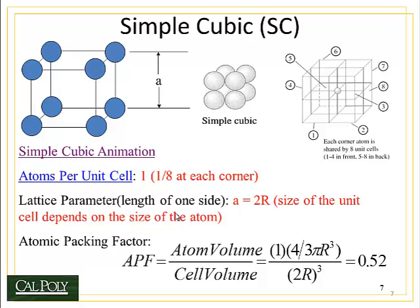The last thing we can figure out about the simple cubic unit cell is something called the atomic packing factor. Atomic packing factor measures the volume of atoms that are inside the unit cell divided by the volume of the unit cell itself, or the atom volume divided by the cell volume. Well, the atom volume is determined by the number of atoms in the unit cell, that's 1, times the volume of an atom. We'll assume an atom is a sphere, so it's 4/3 pi r cubed, divided by the cell volume.